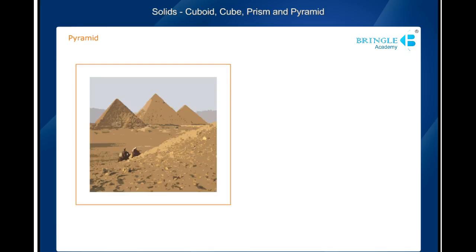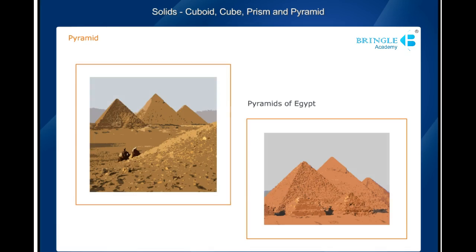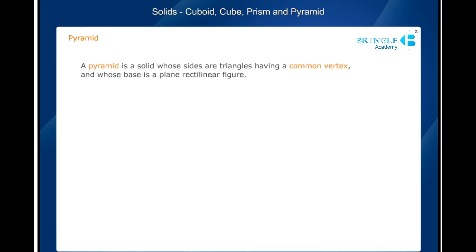Pyramid. These are the pyramids of Egypt. In geometry, a pyramid is a solid whose sides are triangles having a common vertex, and whose base is a plane rectilinear figure.